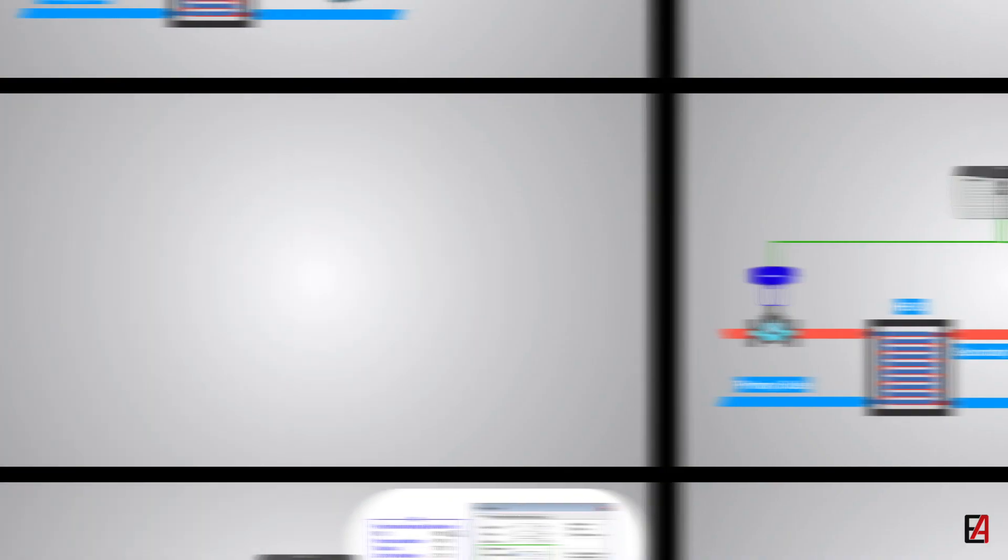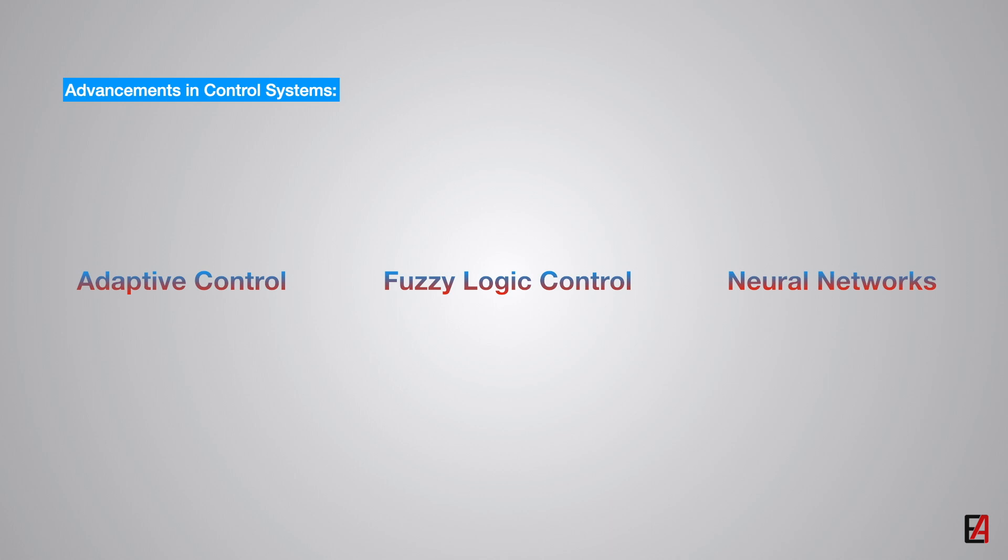Finally, let us see about the advancements in control system. The control systems have evolved further than the PID controller. When the planned dynamic characteristics are unknown and unpredictable, non-linear controllers such as adaptive control, fuzzy logic control, and neural networks are used.